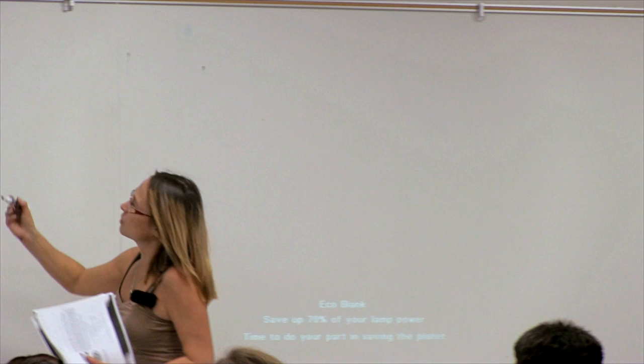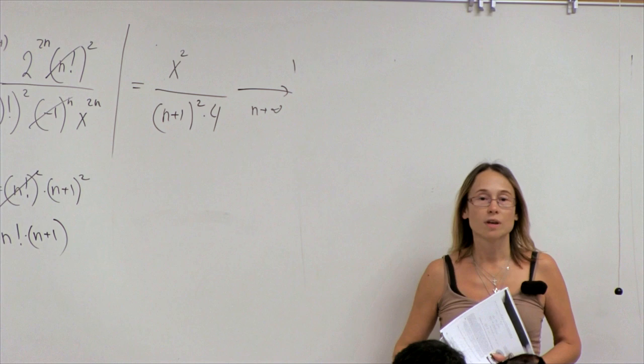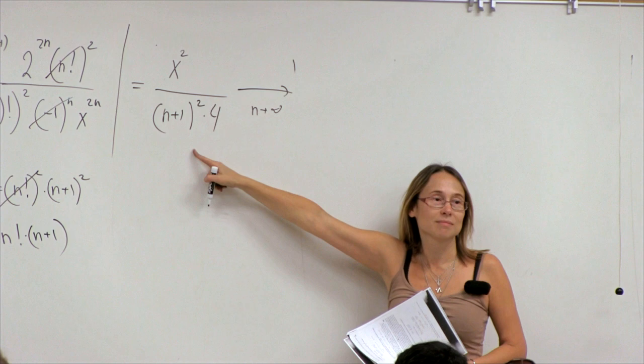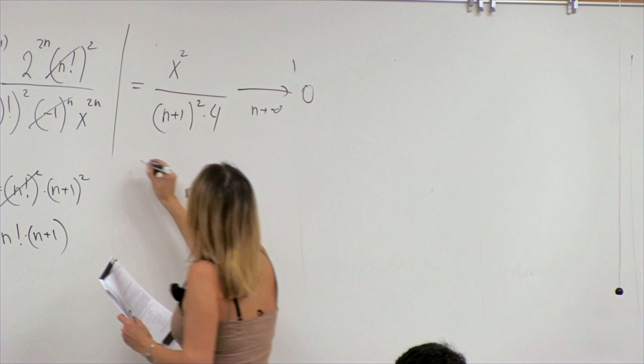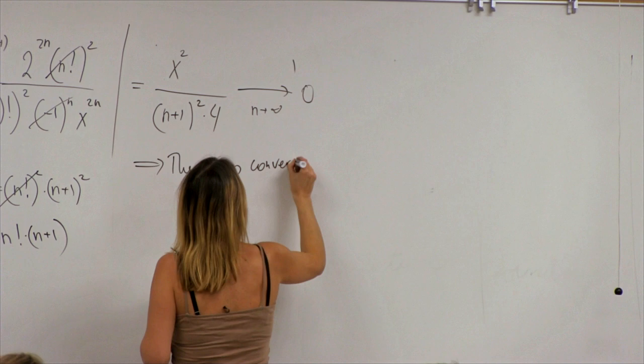The limit as n goes to infinity of x²/(4(n+1)²) — is this difficult to calculate? No. When n goes to infinity, this goes to 0, and it doesn't matter what x is. For any x, this goes to 0 as n goes to infinity.